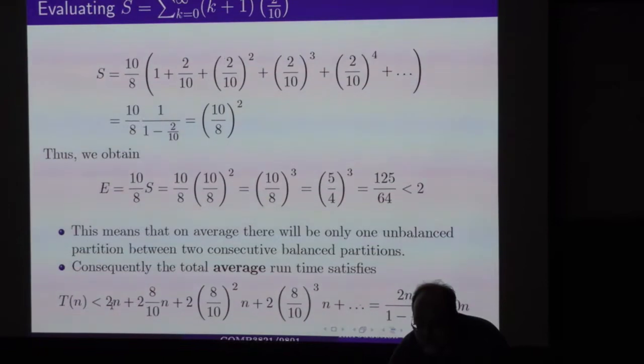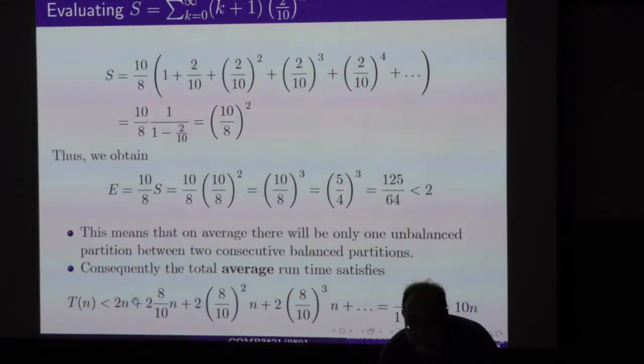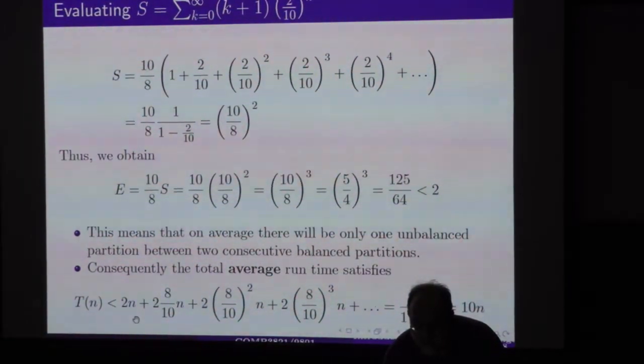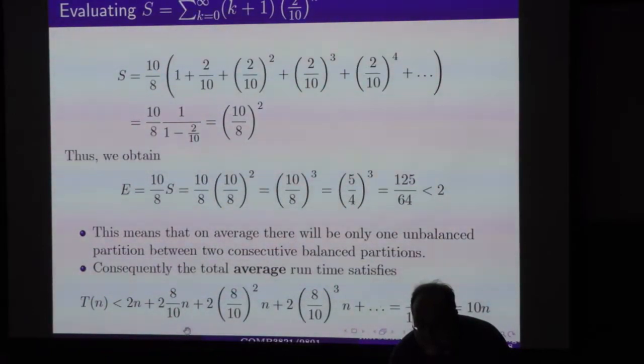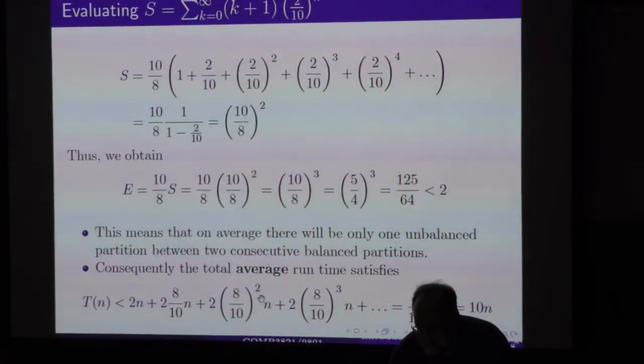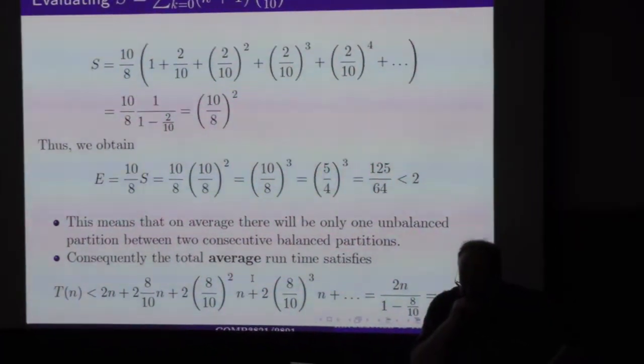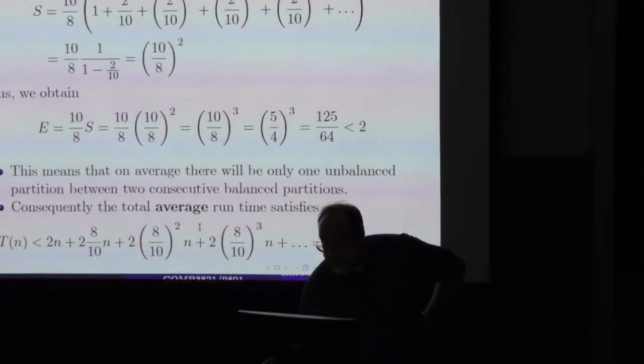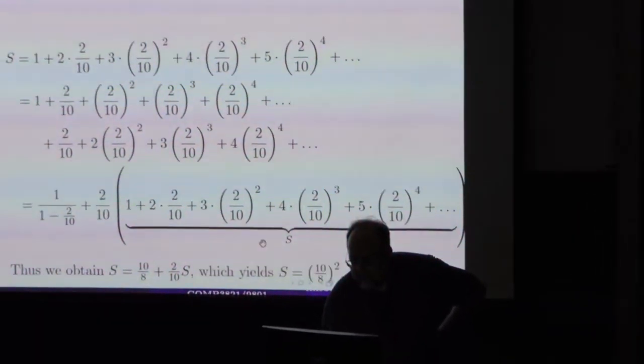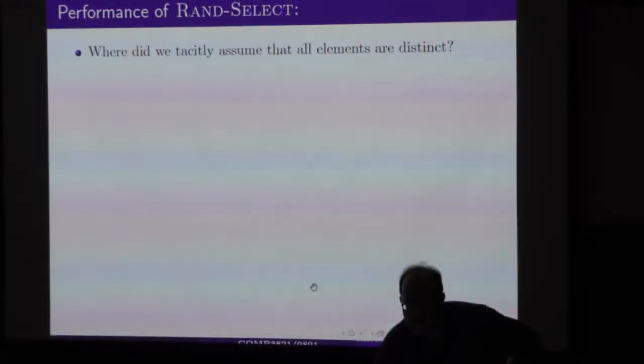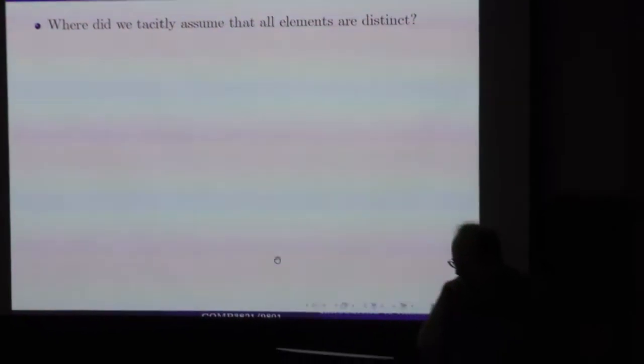So the average run time is then computed in this way. It's two times... N is before the inputs shrink. After one balanced partition, the size of the array becomes 8 over 10. Then it becomes 8 over 10 squared and so forth. And lo and behold, you get yet another geometric partition, a geometric series that sums up to 10N, which means that this is just another way to do this, which shows that the run time on average of the algorithm is linear with small constants, in fact. So that's the algorithm you use in industry.